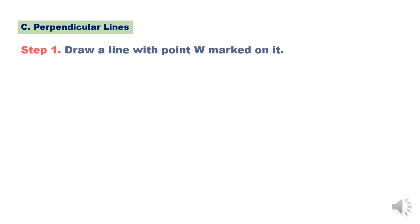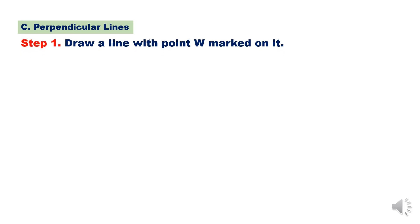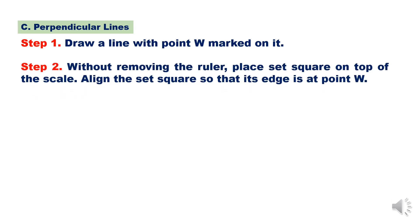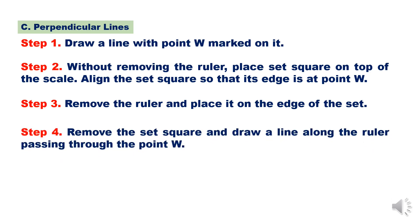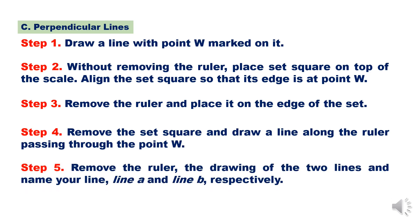Perpendicular lines. Step 1 — draw a line with point W marked on it. Step 2 — without removing the ruler, place the set square on top of the scale. Align the set square so that its edge is at point W. Step 3 — remove the ruler and place it on the edge of the set square. Step 4 — remove the set square and draw a line along the ruler passing through point W. Step 5 — remove the ruler; name the two lines as line A and line B respectively.